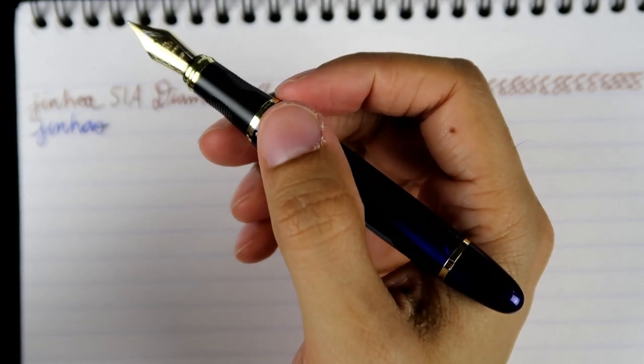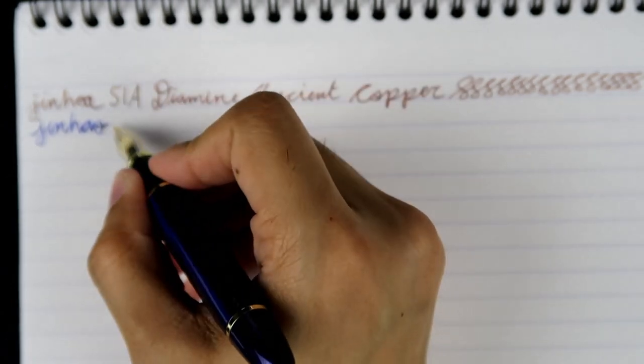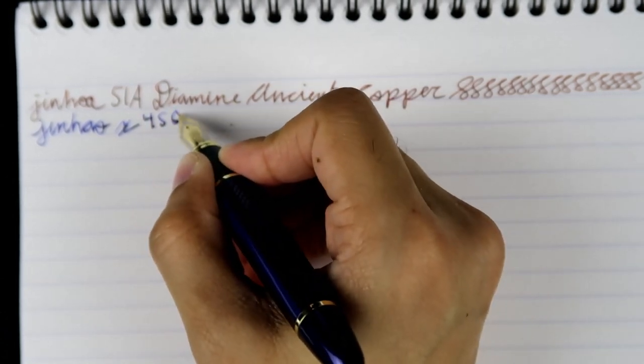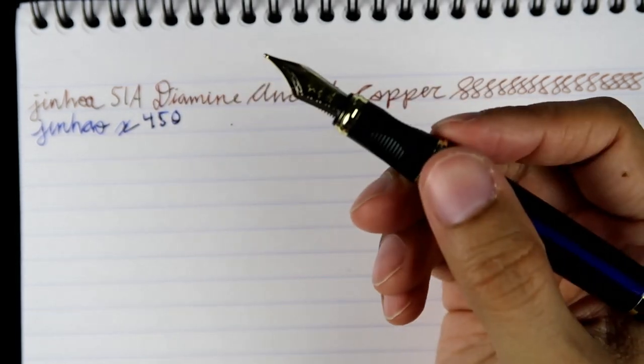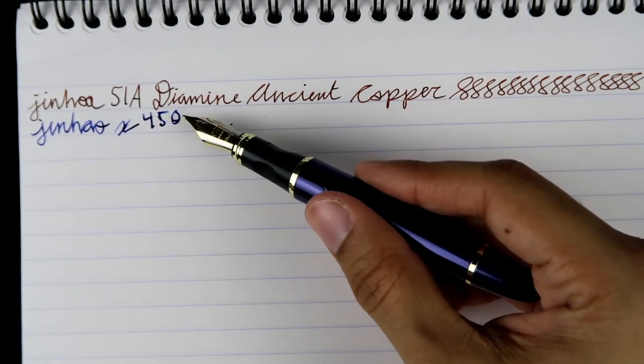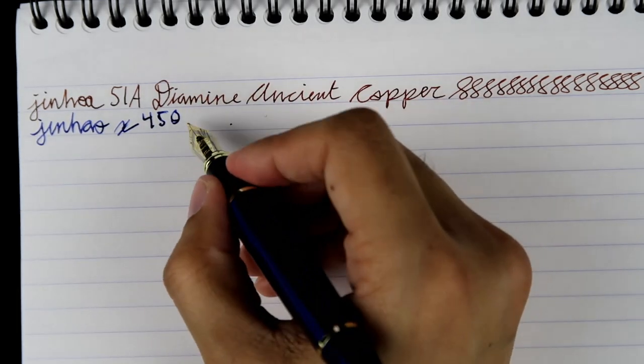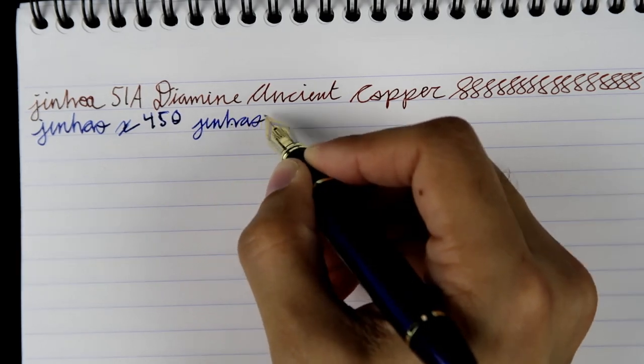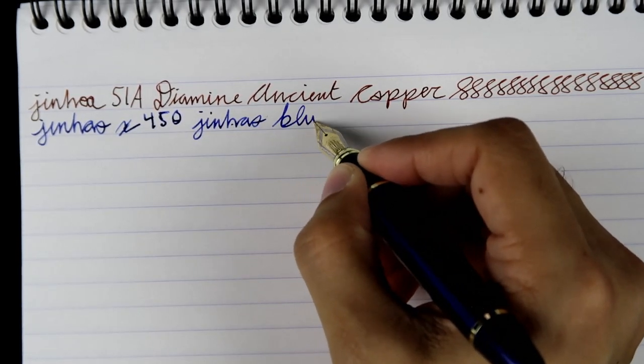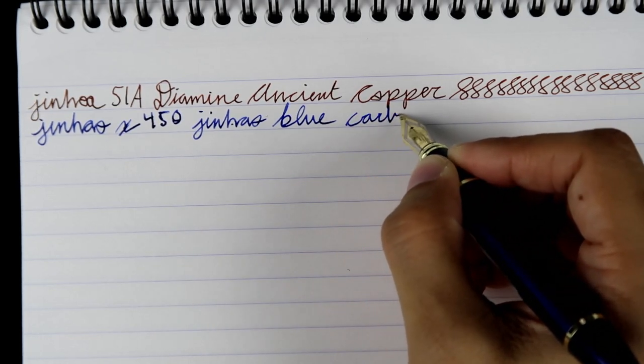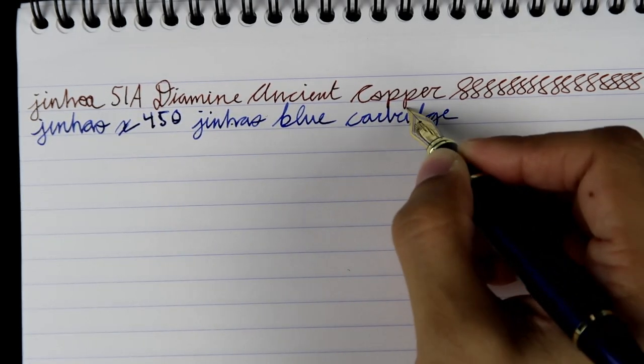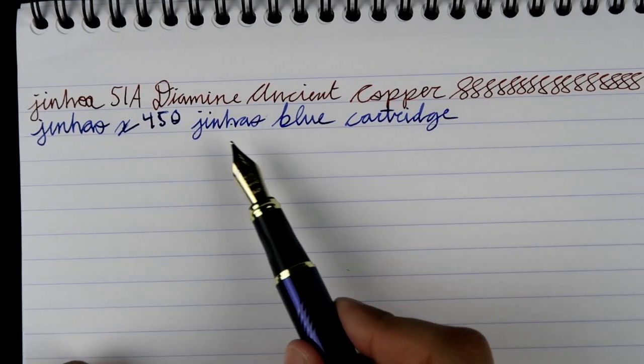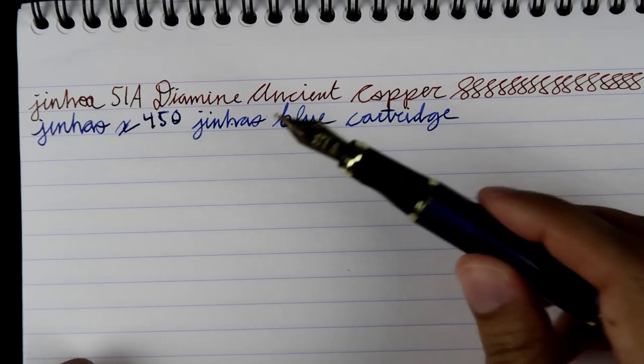So this is a Jinhao, clearly I can't spell Jinhao. Yeah, Jinhao X450. Sometimes this ink skips. Yeah, so these are pretty low budget pens. You know, you'll get some skipping sometimes, but they're very smooth. This has the Jinhao Blue cartridge.